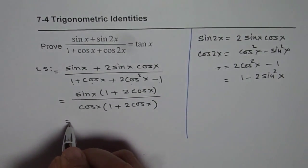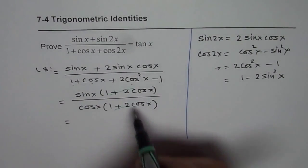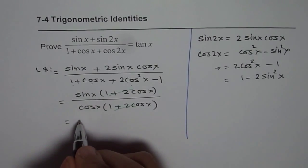And from here 1 plus 2 cos x cancel out. And what do we get? We get tan x.